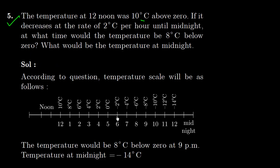Question No. 5. The temperature at 12 noon was 10 degree centigrade. If it decreases at a rate of 2 degree per hour, at what time would the temperature be 8 degree centigrade below 0?